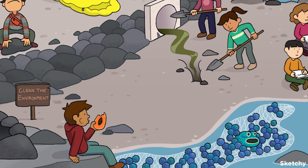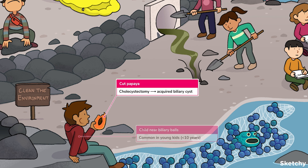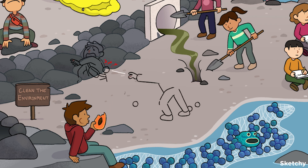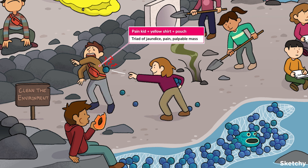Sometimes these cysts can be acquired — for example, they can develop after a cholecystectomy. Clinically, these cysts typically manifest in young children, usually those under 10. The classic triad consists of pain, jaundice, and a palpable mass, but usually you'll see two of the three.